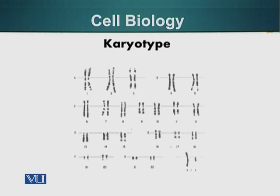Each of us has a genetic contribution from both parents. 50% of our DNA comes from one parent, the mother, and the other 50% comes from the other parent, the father. The chromosomes are in pairs, so we have 23 pairs of chromosomes, or 46 chromosomes in total.